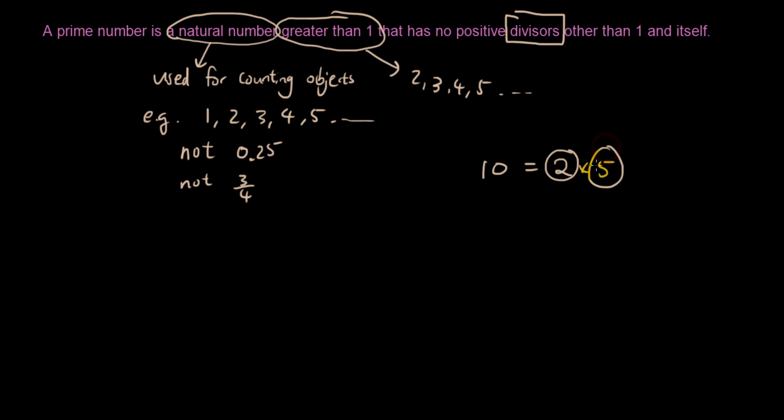2 and 5 are divisors of 10. So you probably have heard of the word factors. Factors, so 2 and 5 are factors of 10. And factors and divisors are the same thing. Okay, factors and divisors just mean the same thing. So factors are divisors. So 2 and 5 are factors of 10 because 2 times 5 equals 10.